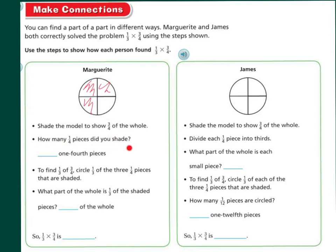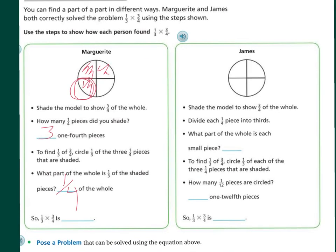How many one-quarter pieces did you shade? I shaded three of the one-fourth pieces. To find one-third of three-quarters, circle one-third of the three one-quarter pieces that are shaded. What part of the whole is one-third of the shaded pieces? It's one-fourth of the whole. So, one-third of three-quarters is one-fourth.